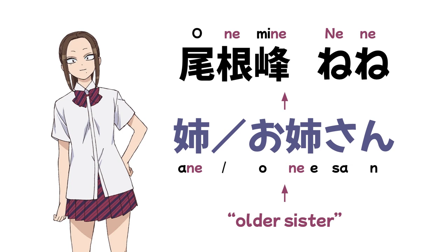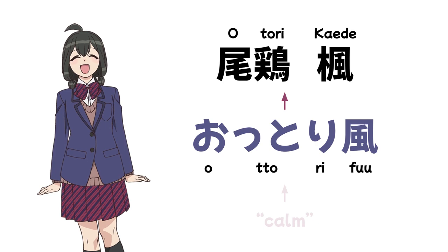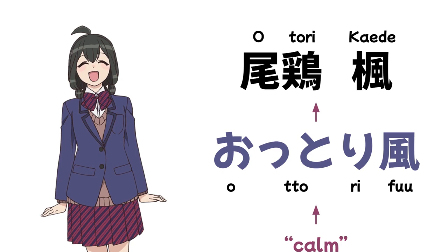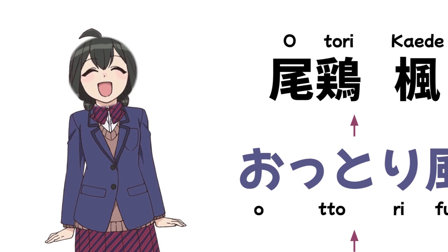Onemine-san's close friend is Otori Kaede. This girl's name is a pun on 'Otori Fu,' which means 'calm,' and yeah, she's a very, very calm and slow person.